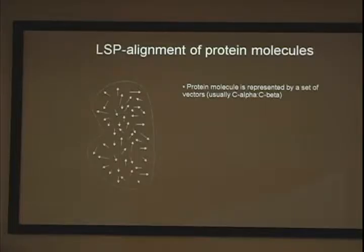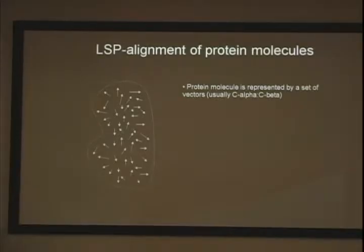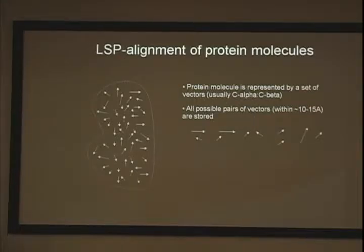It's a graph theory-based method. I won't introduce any special mathematical language; I'll just try to explain how it actually works in terms of physical objects. The protein molecule is considered as a set of vectors. Every residue is a vector, usually between C-alpha and C-beta, though that's optional. We also consider what kind of residues they are. In the first step, we derive all the pairs of vectors in the molecule within a particular range.